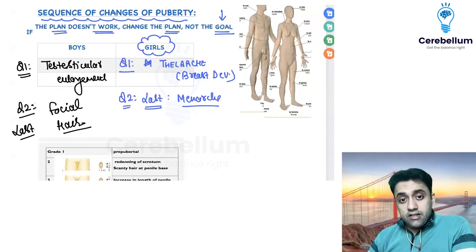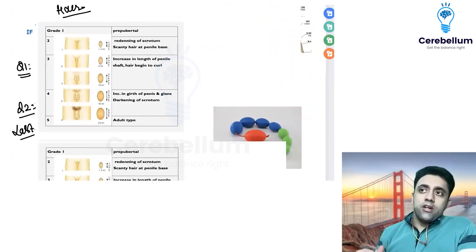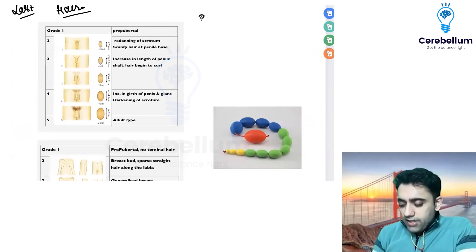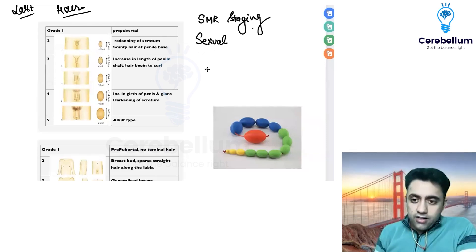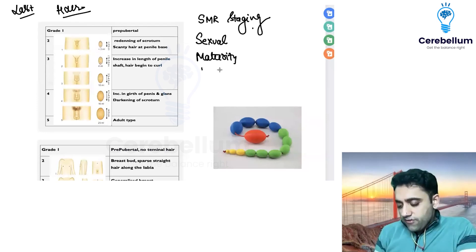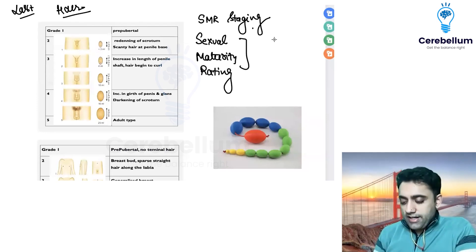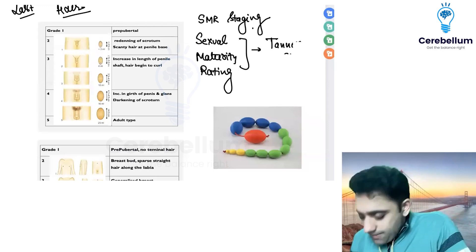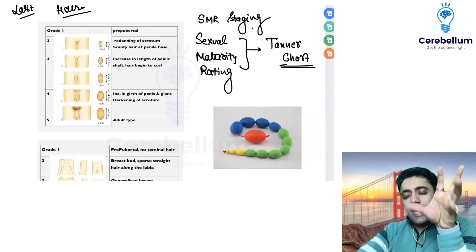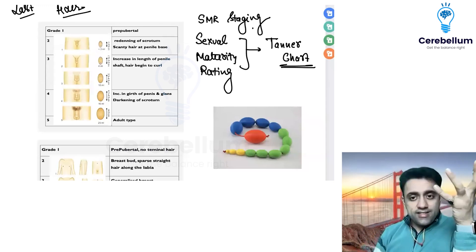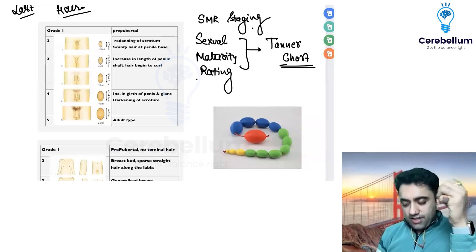Next question: a boy is behaving like a boy and a girl is behaving like a girl — what staging do we use? There is something known as SMR staging — Sexual Maturity Rating staging. SMR staging is used to confirm whether a girl or boy is growing well with proper secondary sexual characters. For SMR staging we use a chart known as the Tanner chart.